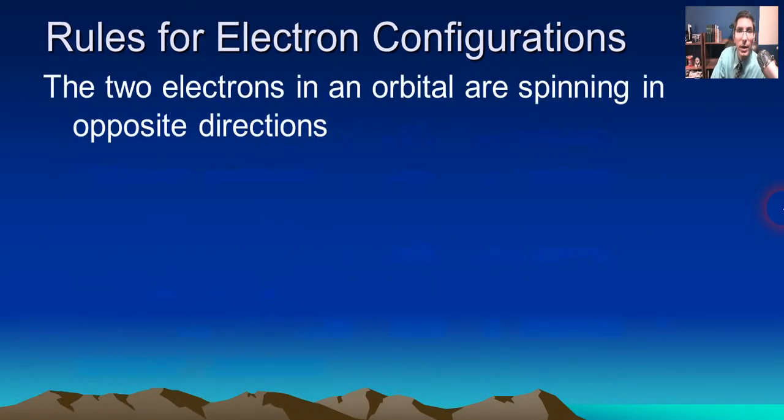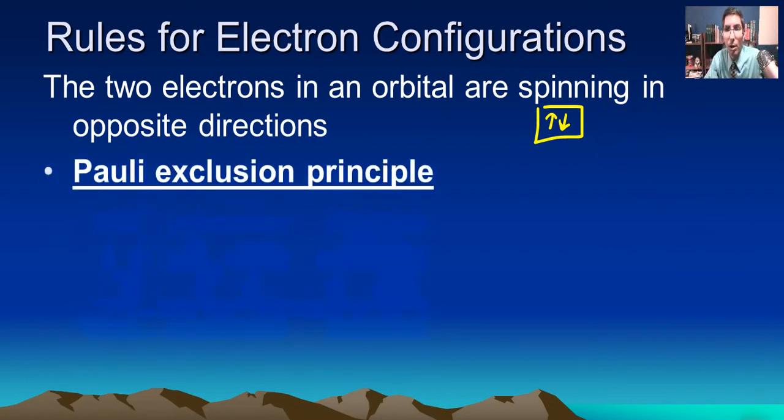Now there's another rule. You might've noticed that when we stuck these arrows into the boxes, they were in opposite directions. The arrows or the two electrons in an orbital are spinning in opposite directions. So one is going in one direction, one's going in the opposite direction. That is called the Pauli exclusion principle.